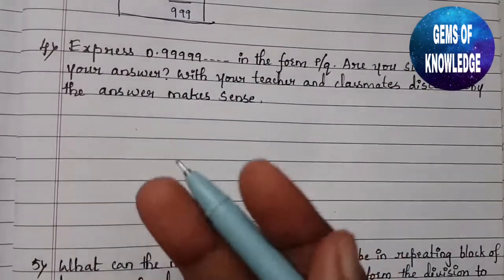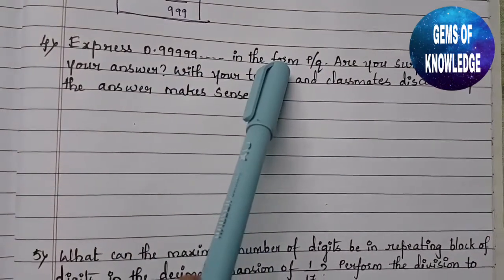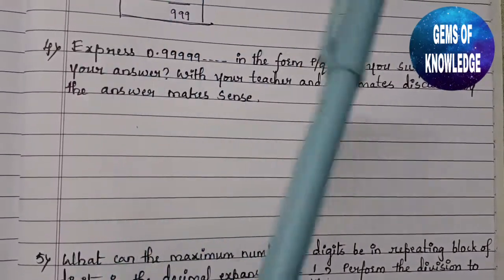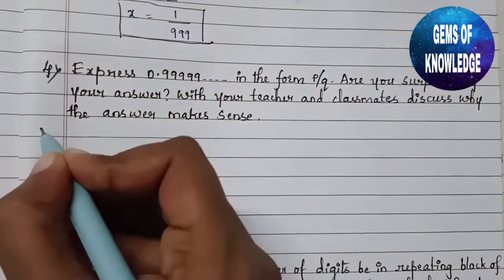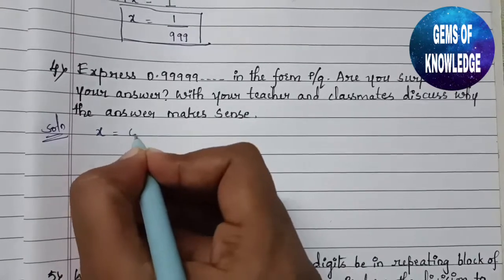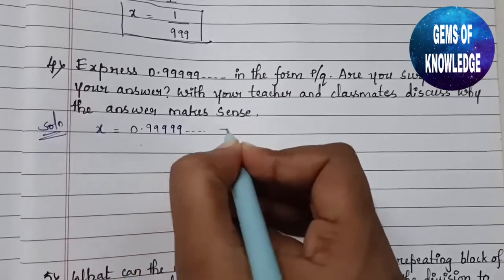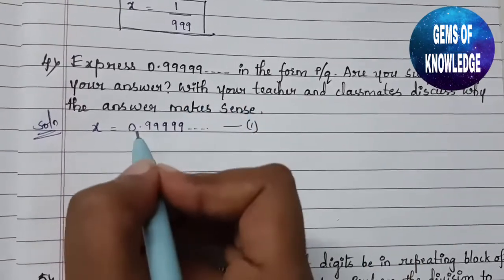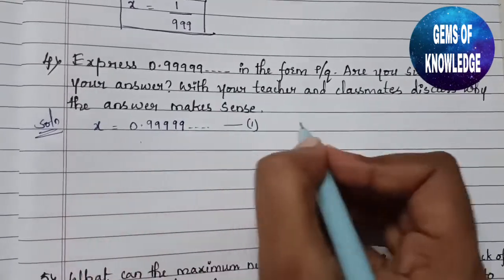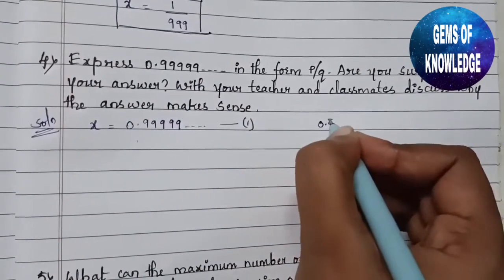We have to convert this into p by q form using the same approach as in question three. First, we take x = 0.99999... — this is equation 1. As you can see, after the decimal point only one digit is repeating, so 0.999... can be written as 0.9 with a bar. Since only one digit repeats, we will multiply equation 1 by 10.